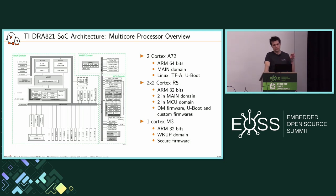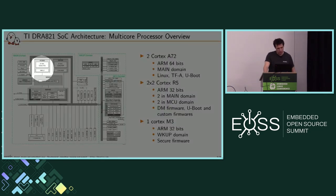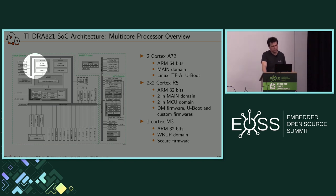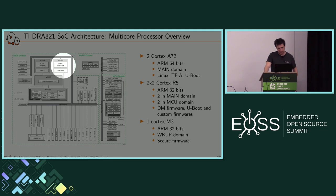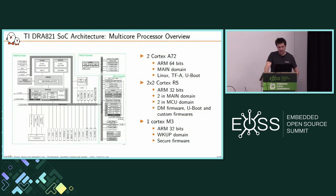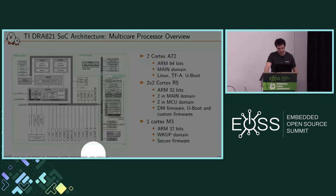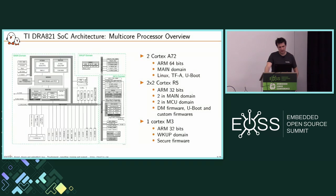Let's focus on the multi-core processor for this SoC, because that's part of the complexity we have to face for suspend to RAM. We have two Cortex-A72 — 64-bit ARM cores — belonging to the main domain, running Linux, TFA, and U-Boot. Then we have two pairs of Cortex-R5: one pair on the main domain and one on the MCU domain, where the DM firmware runs along with U-Boot and custom firmware. Finally, there is the Cortex-M3, called the DMSC, which belongs to the wakeup domain, and that's where the secure firmware runs.